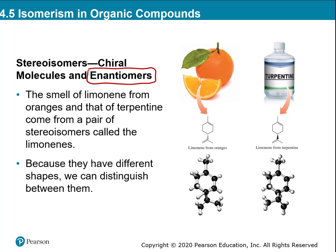Turpentine to me is a very strong smelling solvent used for stripping old varnish off wood. The two molecules look almost identical — the only difference is they look like mirror images of each other. One has the wedge just below the ring, the other has the dash. That's the only difference between them — they're like a right-hand version and a left-hand version, mirror images.